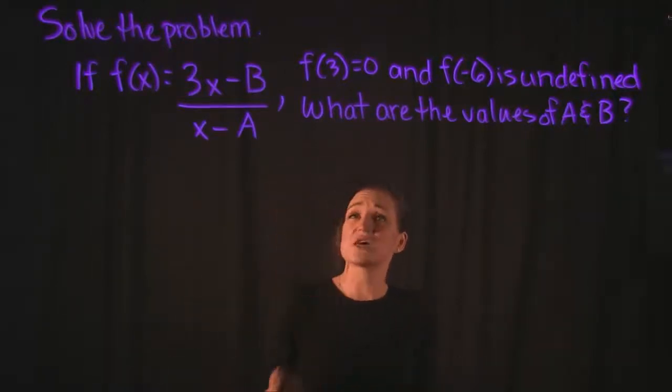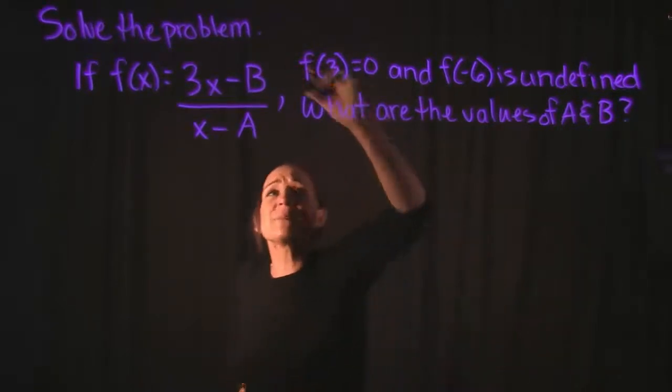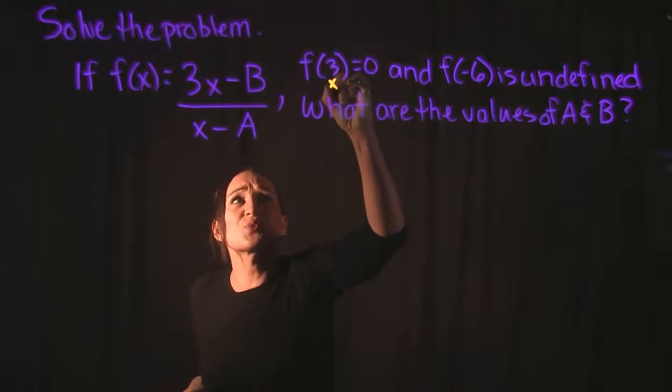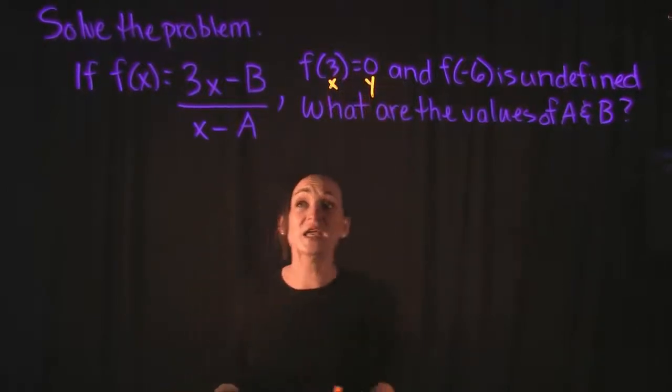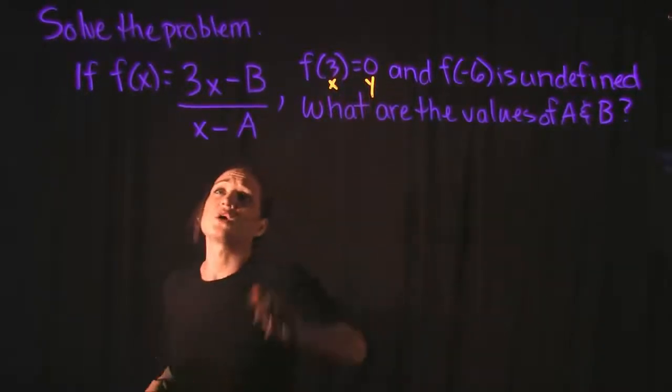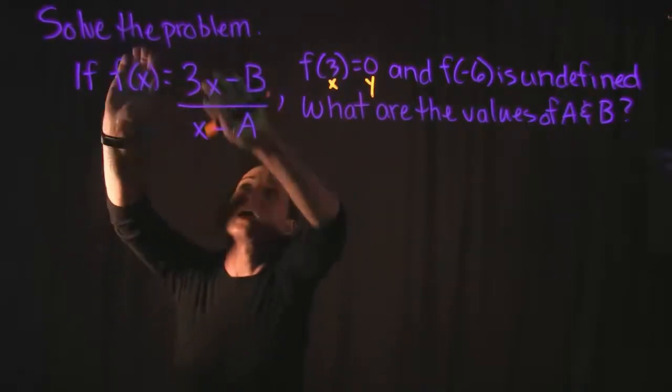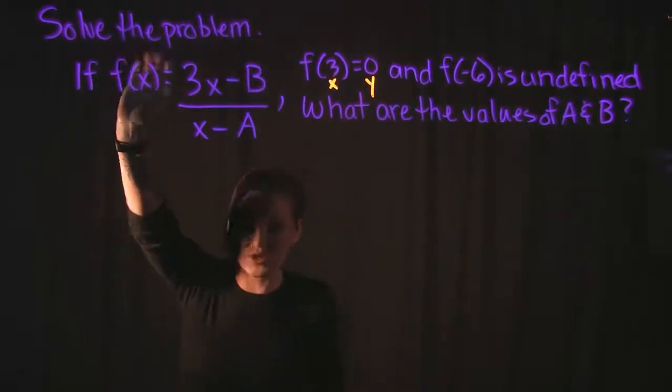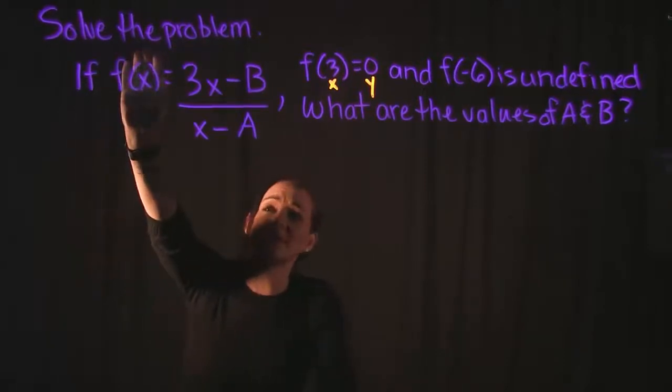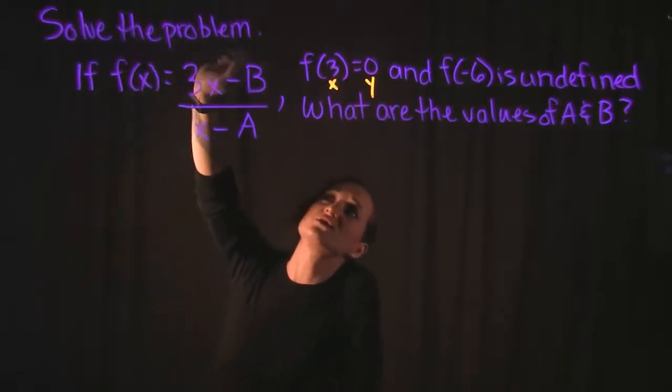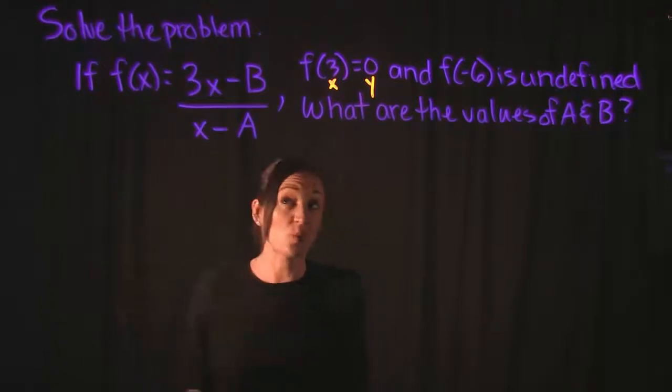So one of the first things it tells us is that f of 3 is equal to 0. So that means if I plug in 3 for x, I'm going to get 0 for y. So that means I can plug in a 3 here for these x's, and that means that f of x, which is equal to y, so this would be 0 here. That would still give us b and a that we wouldn't know.